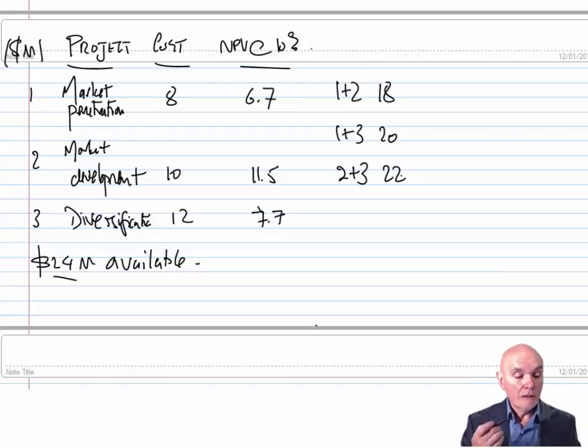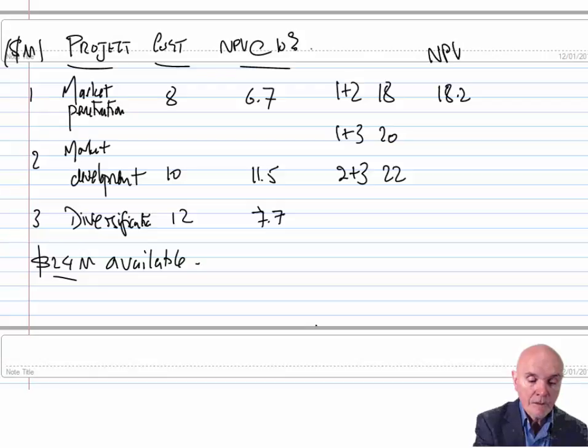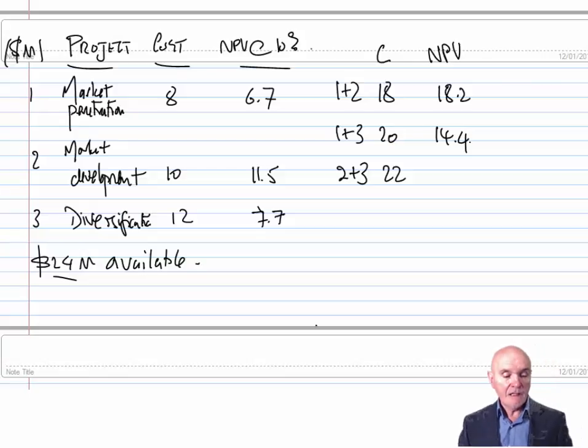And the NPV is coming out. Well, 1 plus 2 is going to be 6.7 plus 11.5, that's 18.2. This is the cost. Then we have 1 plus 3, that's 6.7 plus 7.7, that looks at 14.4. And lastly, using most of the capital here, is 2 plus 3, 11.5 plus 7.7, 19.2. You look at these three possible permutations and say that one there is the best. We would advise them in a situation of the projects being indivisible to do projects 2 and 3.